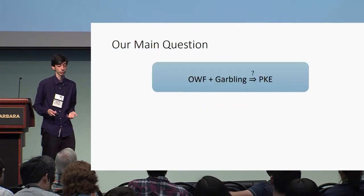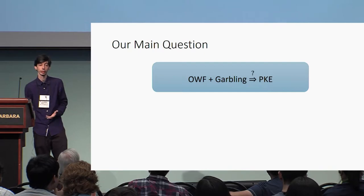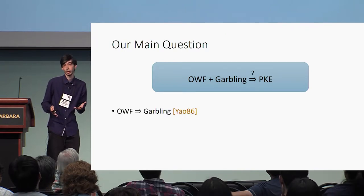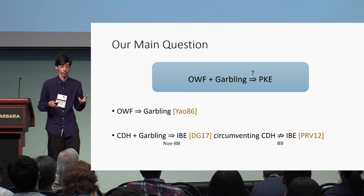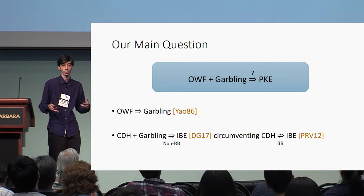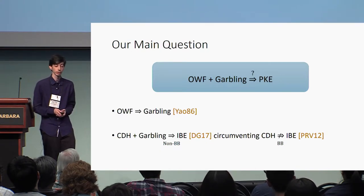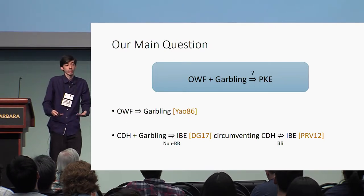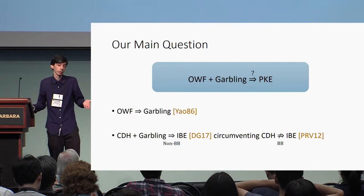Going back to our main question: can we get public key encryption from one-way function plus garbling? What motivates this question is that we know garbling can be obtained from one-way functions by the result of Yao. By the recent result of Döttling and Garg, they show that identity-based encryption can be obtained from the computational Diffie-Hellman assumption using garbling in a non-black box way, circumventing a previous impossibility result showing IBE cannot be obtained from CDH. So we want to ask: can we use garbling to circumvent the Impagliazzo-Rudich impossibility result and build PKE from one-way functions in a non-black box way?